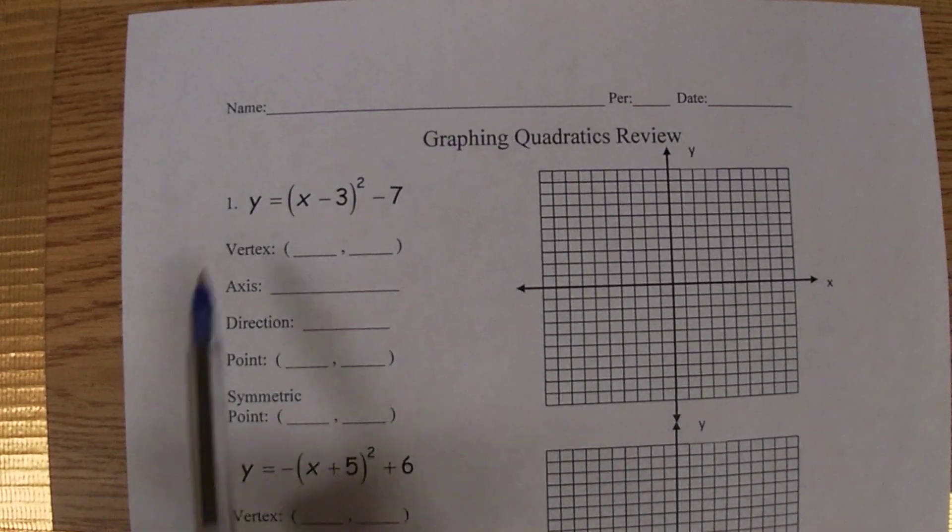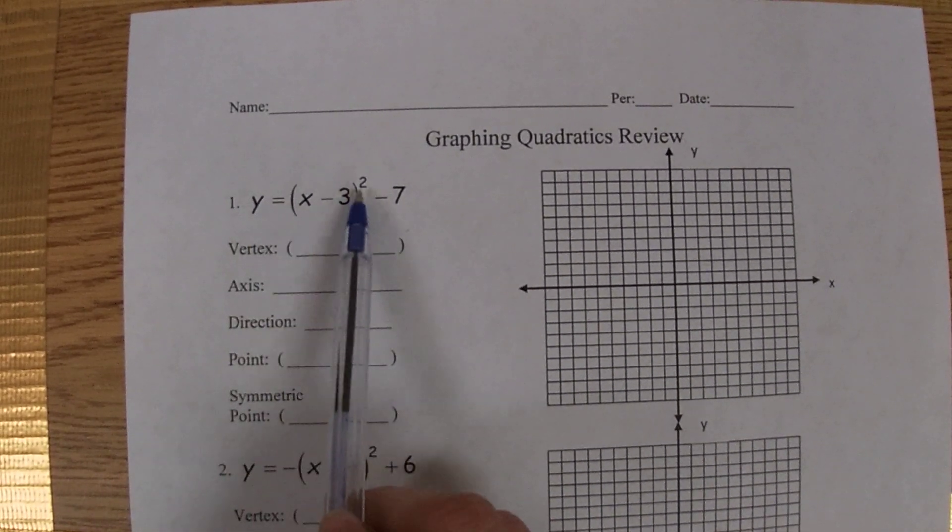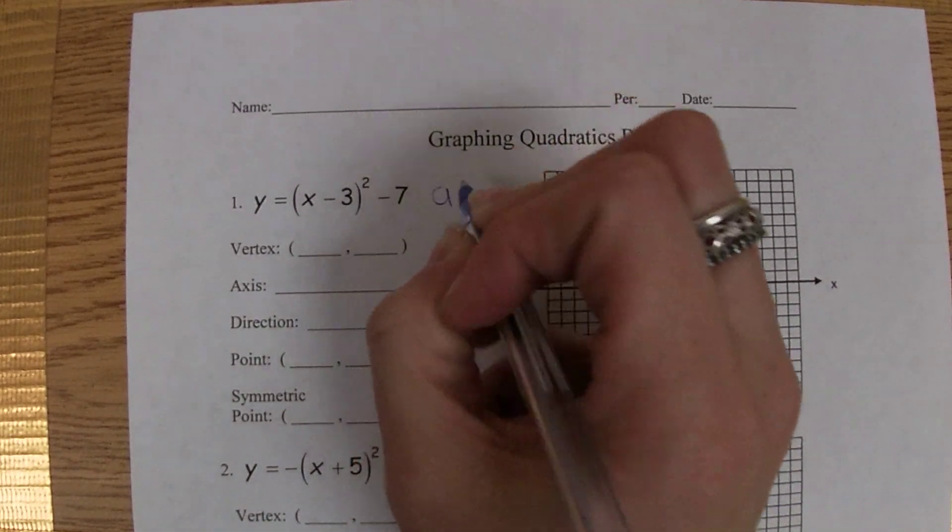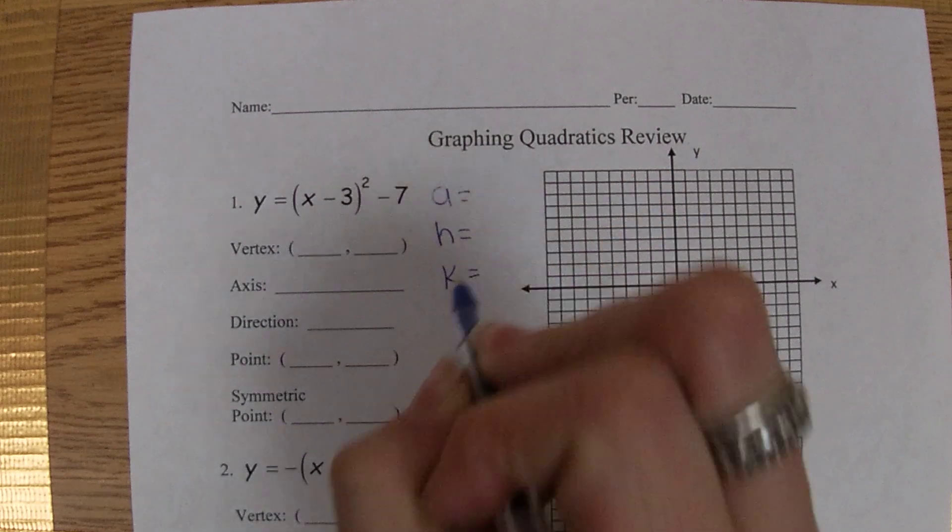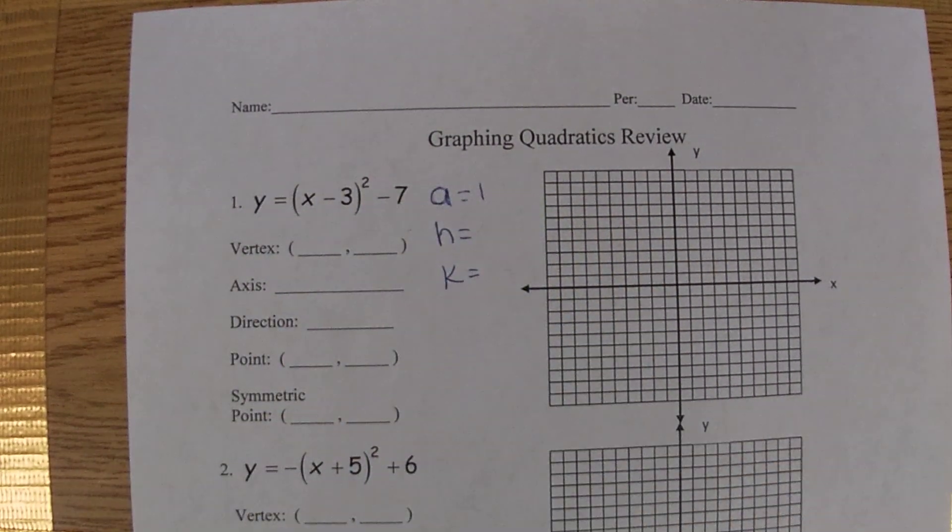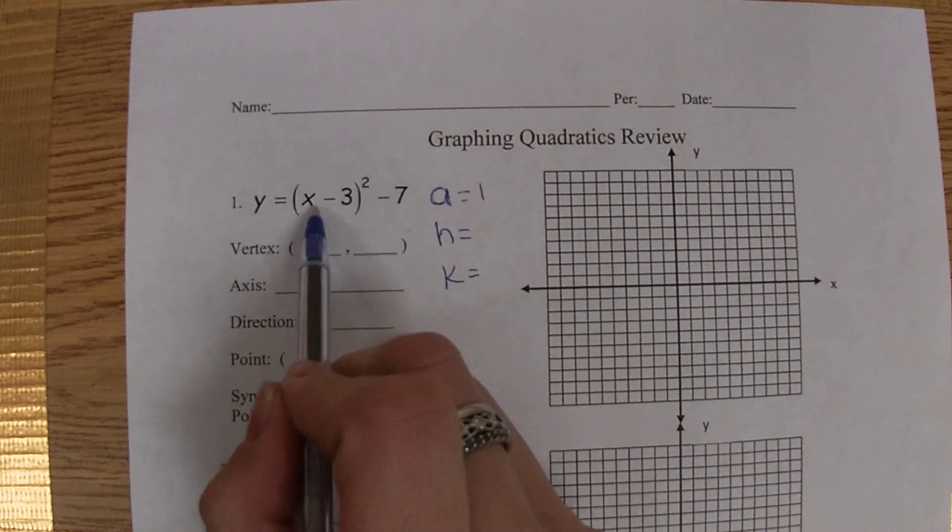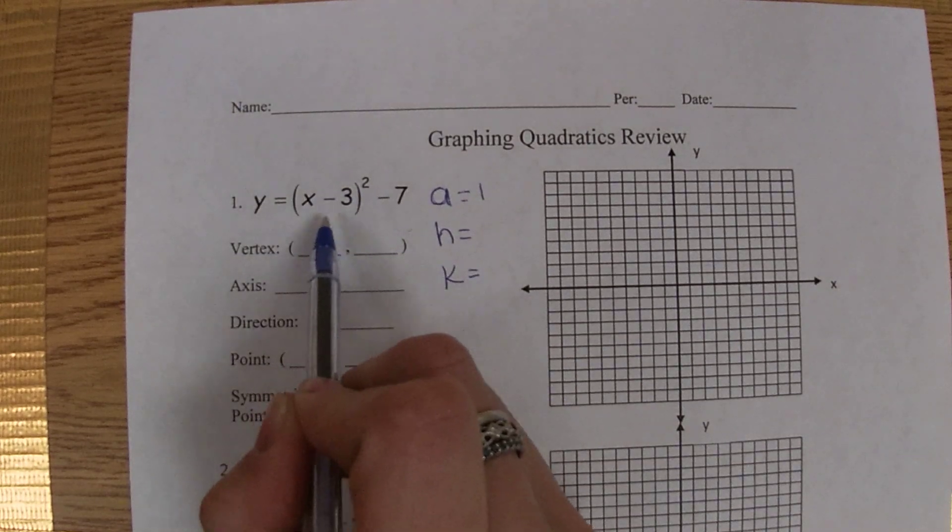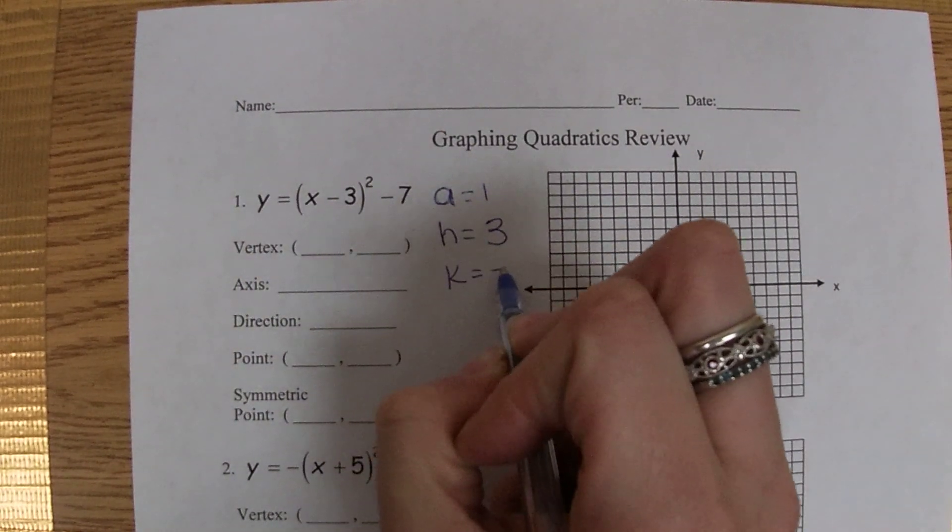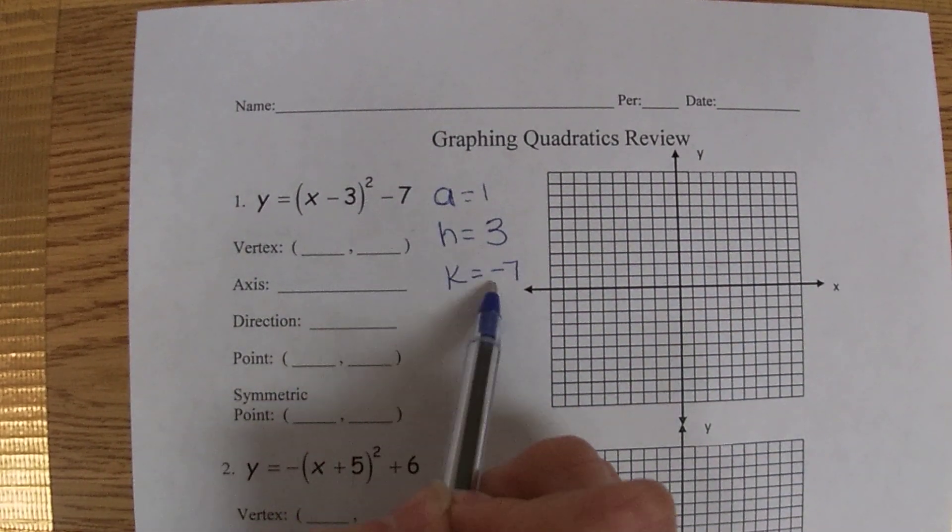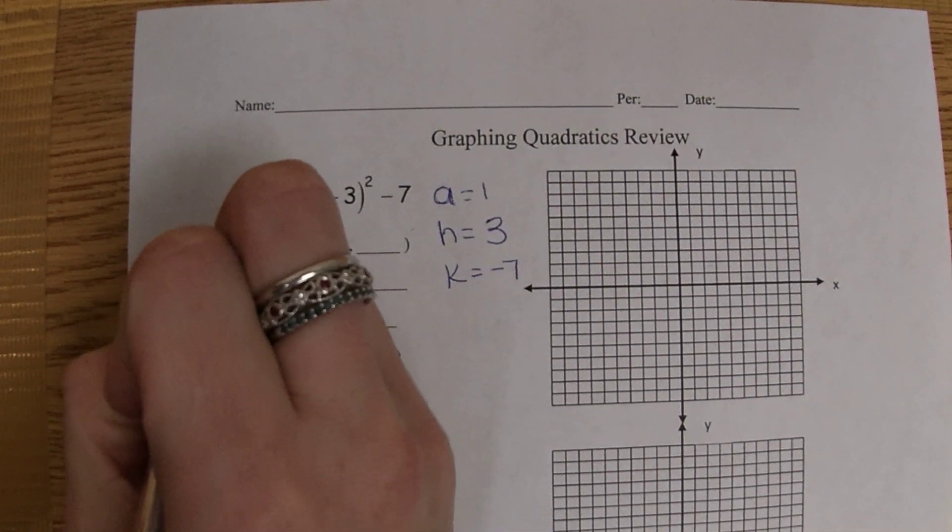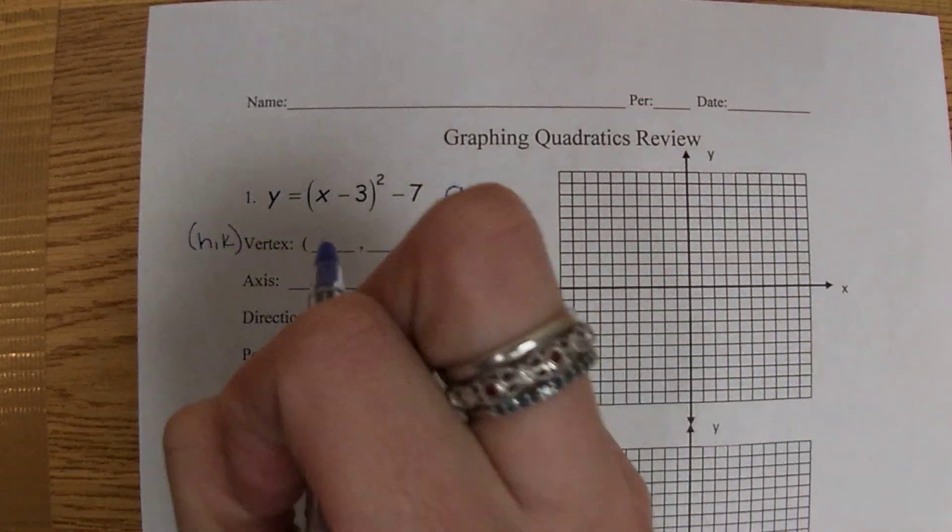Number one is set up in vertex form. We have the parentheses and it's squared, which tells us that we can find a, we can find h, and we can find k. a is always what's in front of the parentheses, so a is going to be a positive one. h, remember we're taking the opposite sign of it, so this looks like a negative three but we're going to write it as a positive three. k stays the sign of what it looks like, so it looks like a negative seven, so I'm writing a negative seven.